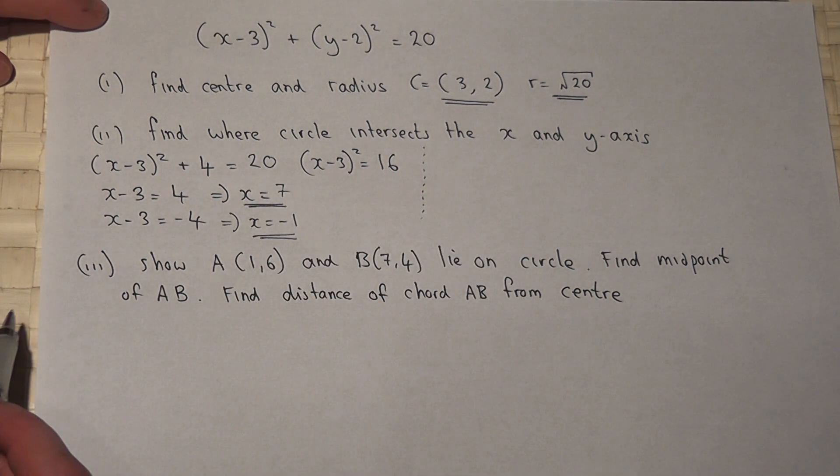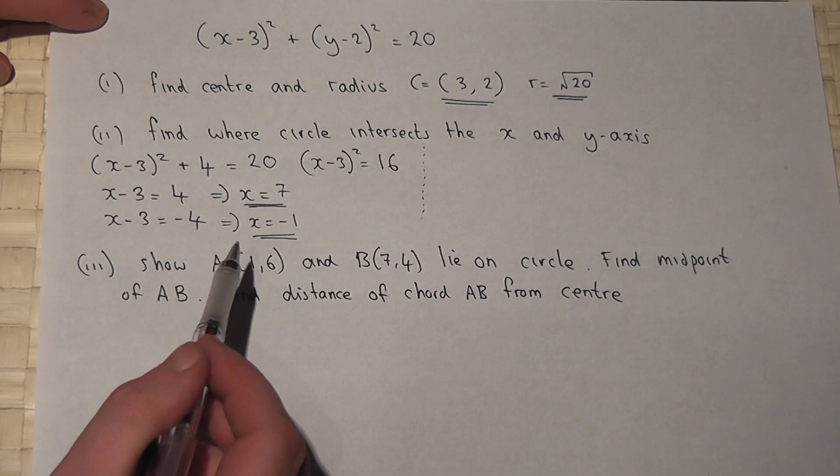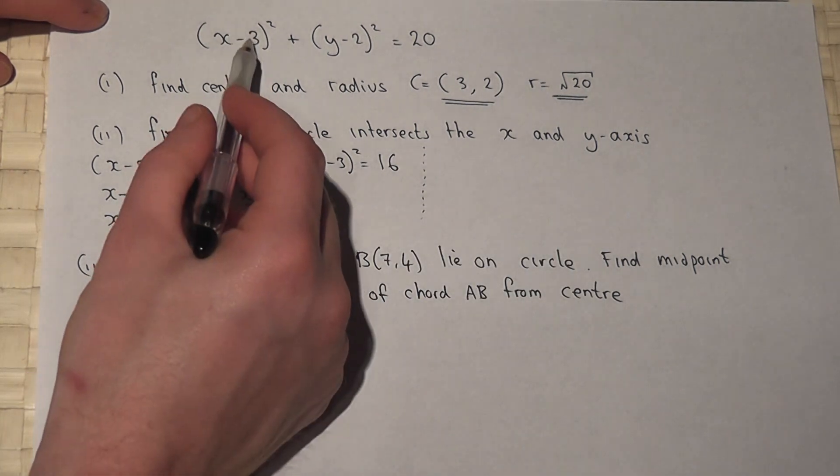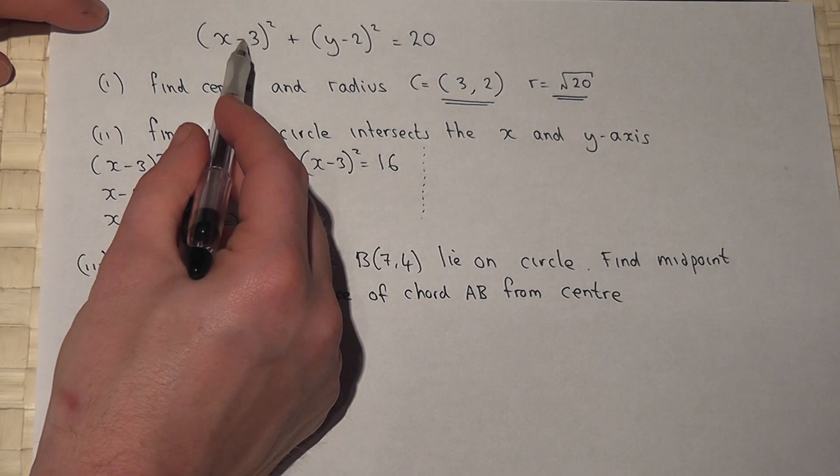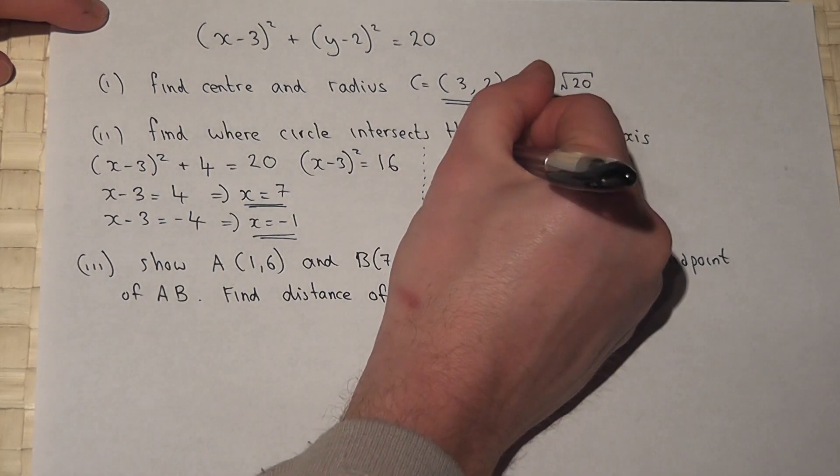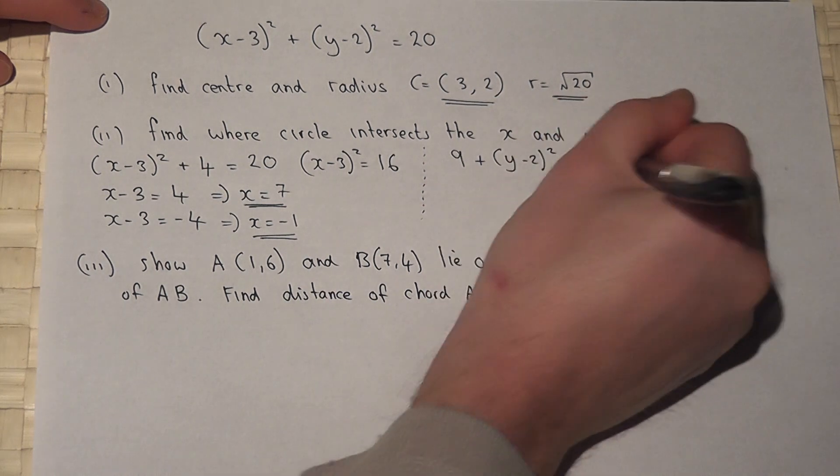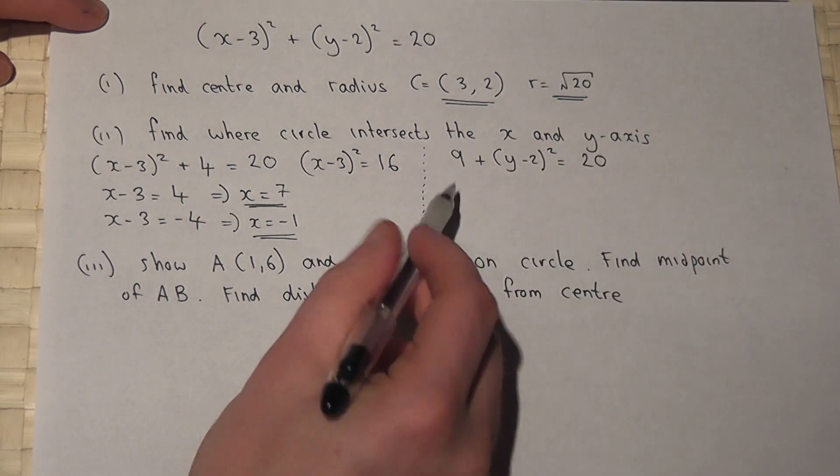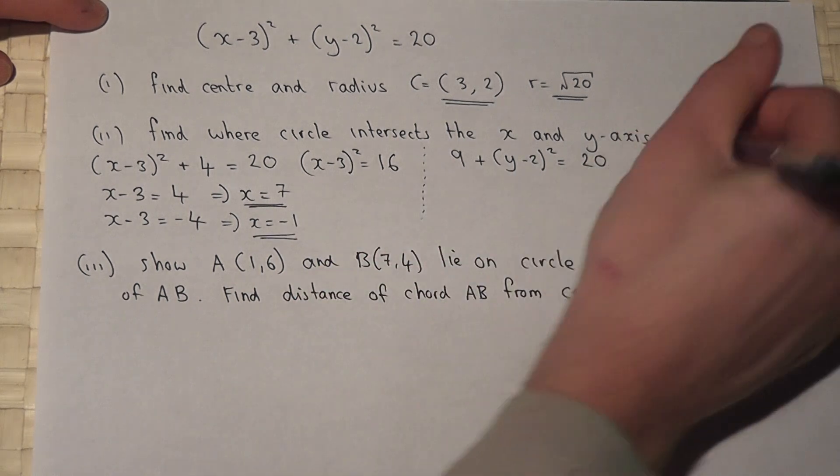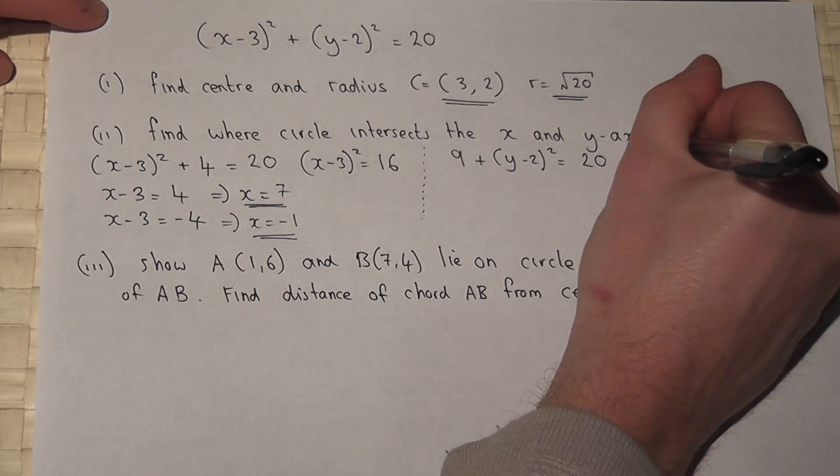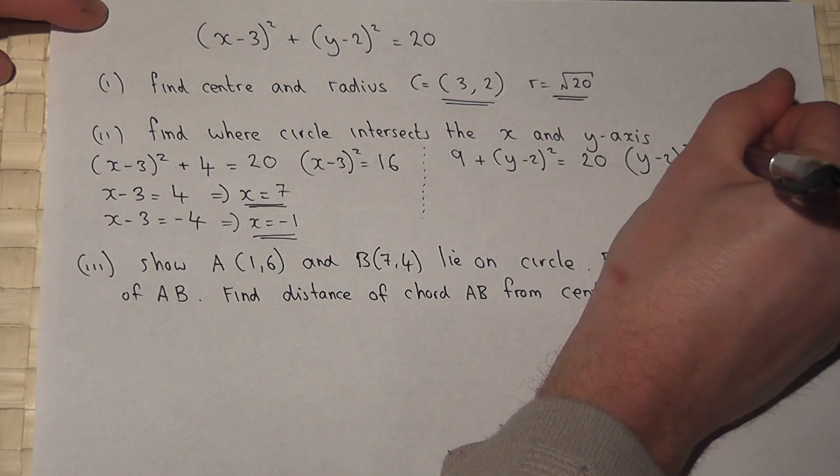The circle intersects the y-axis where x is 0. So if x is 0, -3 squared is 9. So 9 + (y-2)² is 20. I now take away 9, so (y-2)² equals 11.